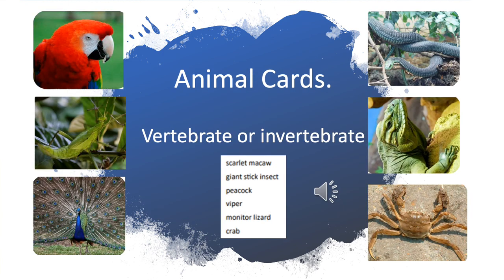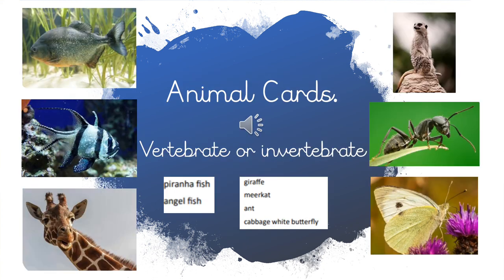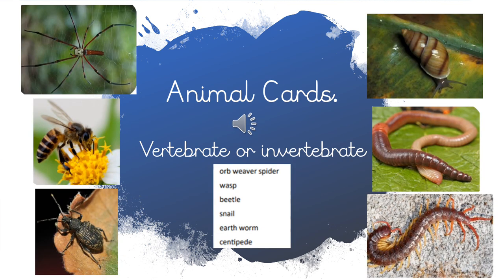Using each one of these animals, can you classify it as a vertebrate or an invertebrate? Using all six of these pictures, classify these animals as a vertebrate or invertebrate and remember to record them in your books. For the last six animal cards, classify these into vertebrate or invertebrate. Remember: vertebrates are ones with a backbone, and invertebrate is without a backbone.